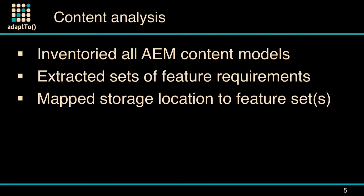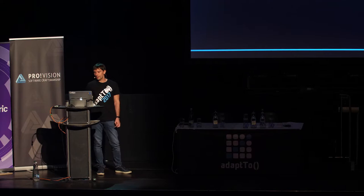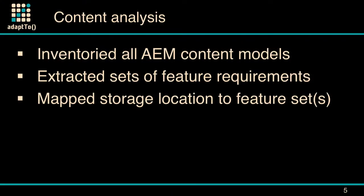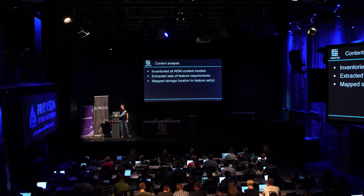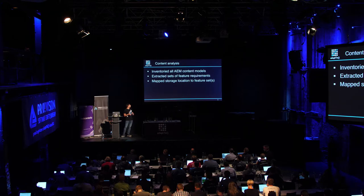We realized that we need to understand what we have in AEM before being able to do this kind of bundling. We needed to do a content inventory — everybody had to go through all the content packages and bundles to see what we have there. All the content models were then described based on their origin, storage, deployment, and usage pattern. We called those content categories. Once we did that, we extracted a set of feature requirements and tried to combine similar groups of features to certain storage locations — root folders addressing the same concerns should probably go into the same location.